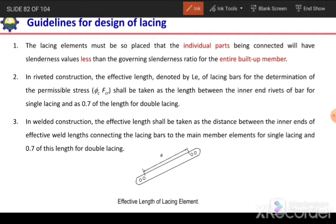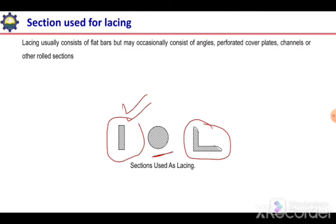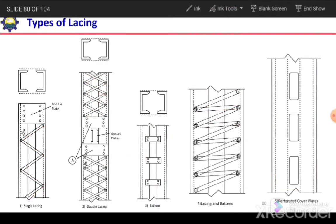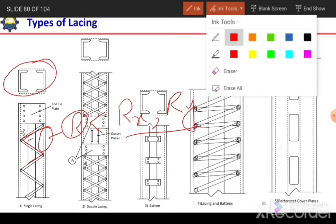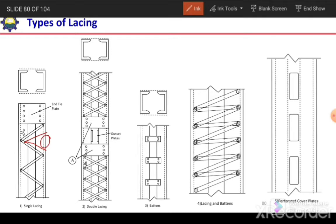The first guideline for the design of lacing: the lacing element must be placed so that the individual part being connected has a slenderness value less than the governing slenderness ratio of the entire built-up member. The slenderness ratio of the individual member between lacing points should be less than the governing Rx or Ry of the built-up section. If the slenderness ratio is too high, we can reduce the spacing between lacing elements to reduce the slenderness ratio of the individual member.